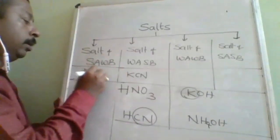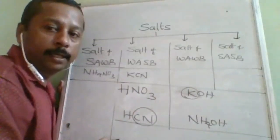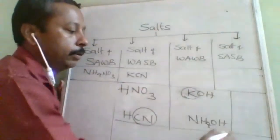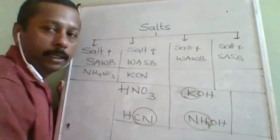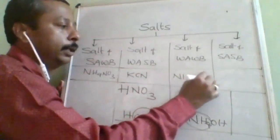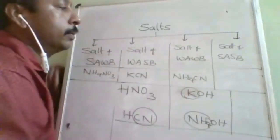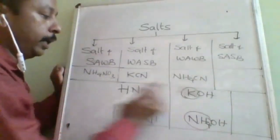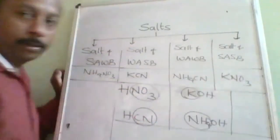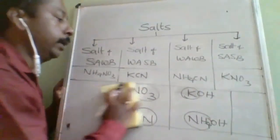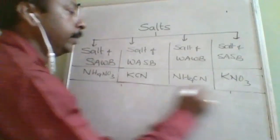For weak acid and weak base: weak acid is HCN, weak base is NH₄OH. Take CN⁻ and NH₄⁺ — the example becomes NH₄CN. For strong acid and strong base: take K⁺ from KOH and NO₃⁻ from HNO₃ — the answer is KNO₃.